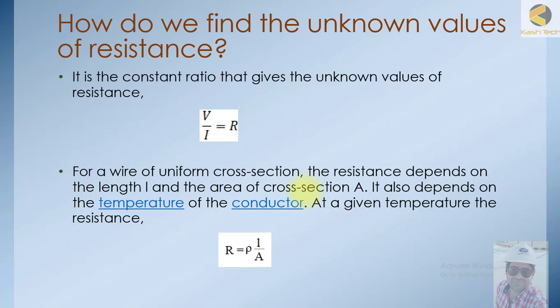Then we can define the formula and the rules. We have the resistance formula, which is basically equal to resistivity multiplied by length divided by area. In this way, you can calculate the total resistance of a conductor.